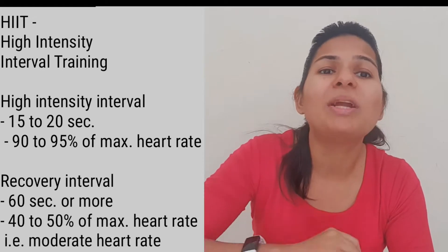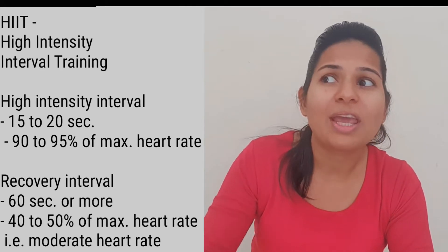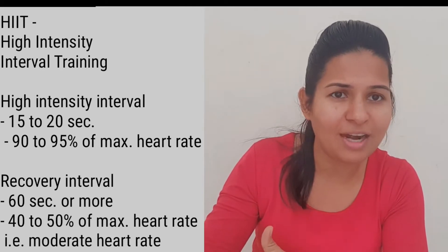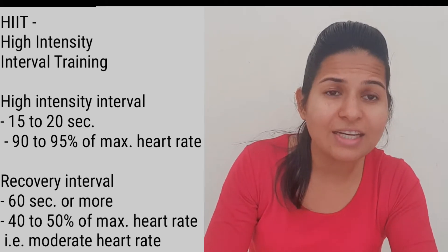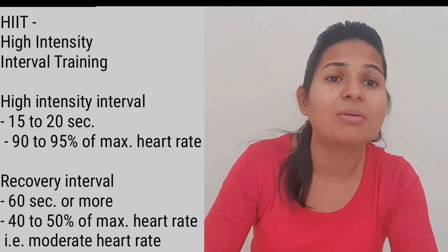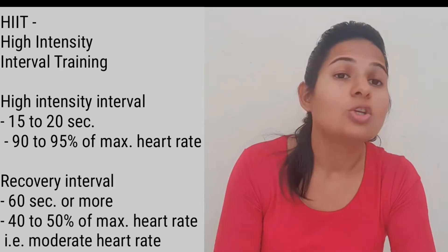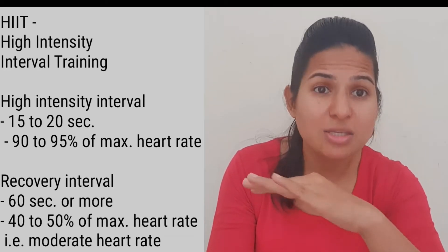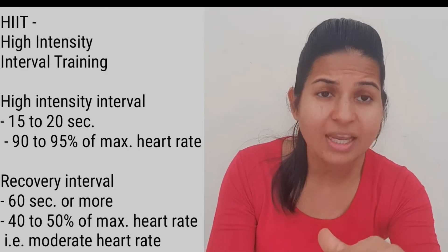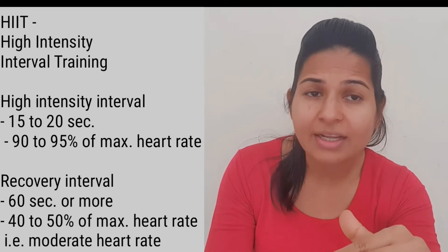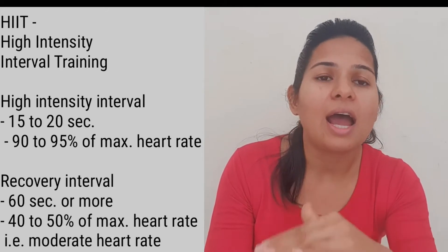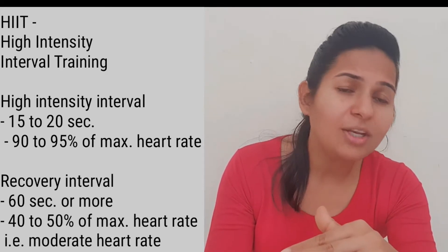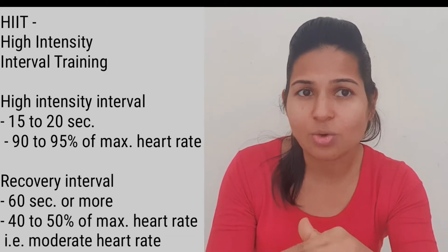By then you will be drained. If I'm doing HIIT cardio on a treadmill, the high intensity interval will be at the maximum speed I can do. High intensity interval means maximum intensity, maximum heart rate, and we will only be able to do this for around 15 to 20 seconds.